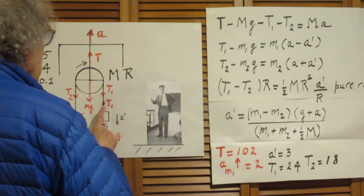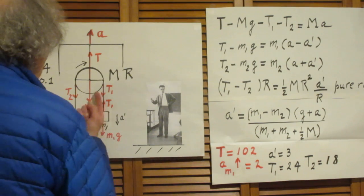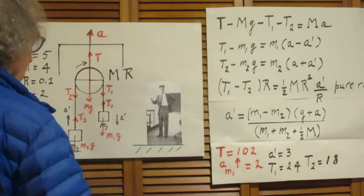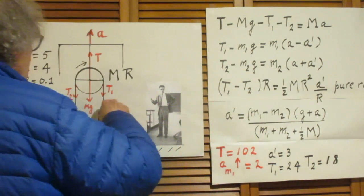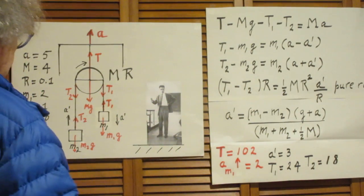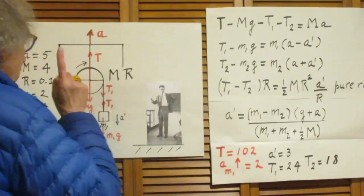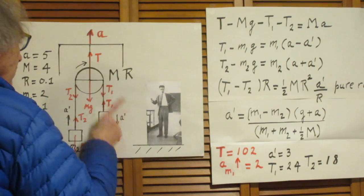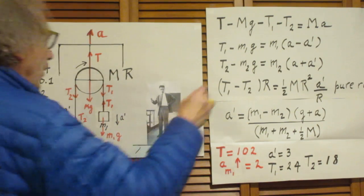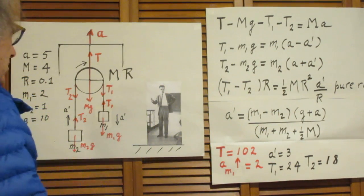Let's now go to this object. T1 upwards minus m1g downwards equals m1 times - but now you have to take the vectorial sum of this one and this one, and so that is a minus a'. a is in this direction, a' is in this direction.